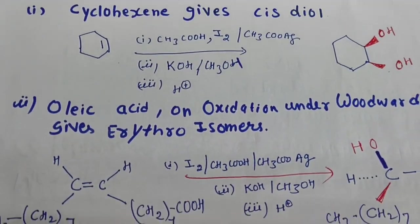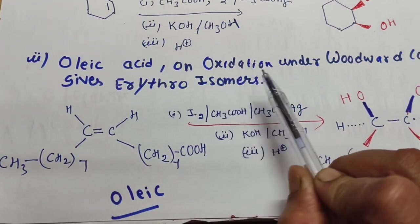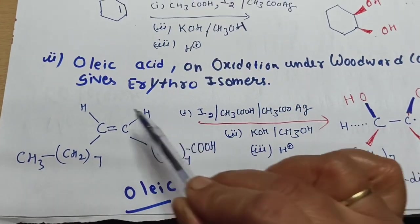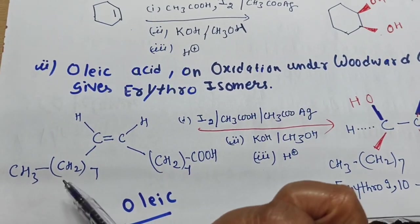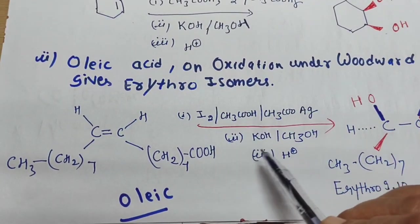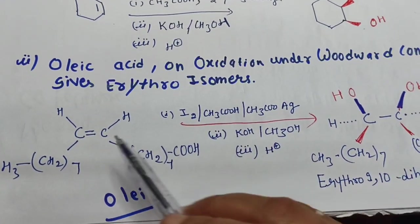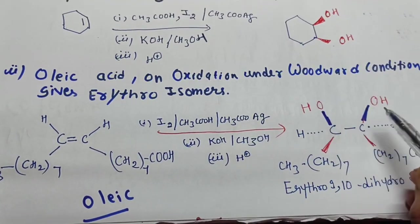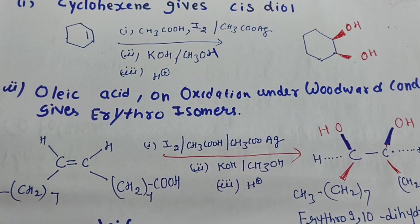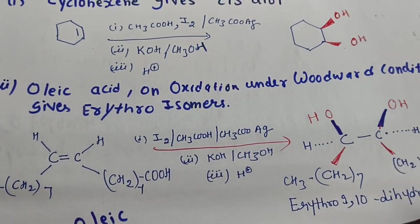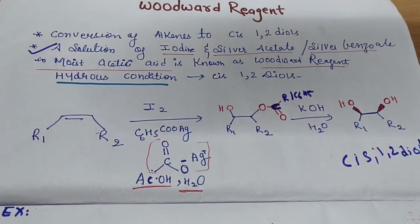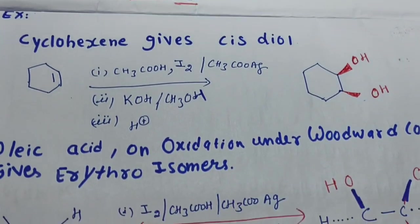Another example: oleic acid on oxidation under Woodward conditions gives the erythro isomer. The structure of oleic acid is CH₃(CH₂)₇CH=CH(CH₂)₇COOH — a C18 fatty acid with one double bond. When the Woodward reagent is applied, the two OH groups get attached to the alkene carbons on the same side, giving cis addition. The double bond is removed and both OH groups are attached on the same side.